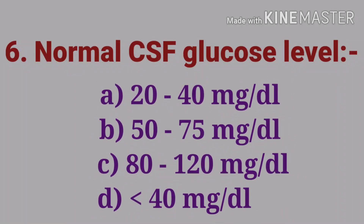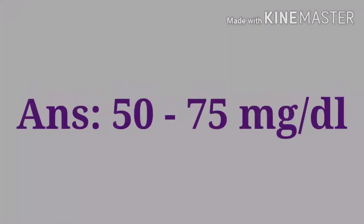The sixth question: normal CSF glucose level — options are 20–40 mg/dL, 50–75 mg/dL, 80–120 mg/dL, or less than 40 mg/dL. The normal CSF protein level is 15 to 45 mg/dL. The normal CSF glucose level is 50 to 75 mg/dL.